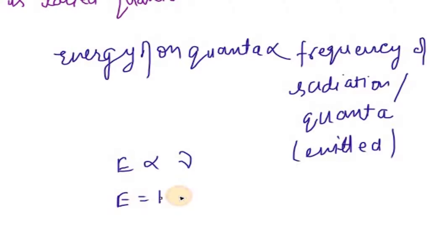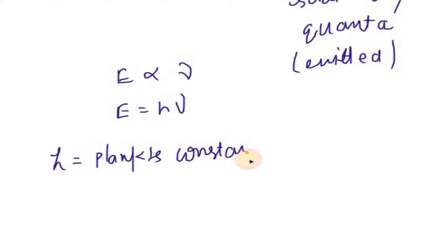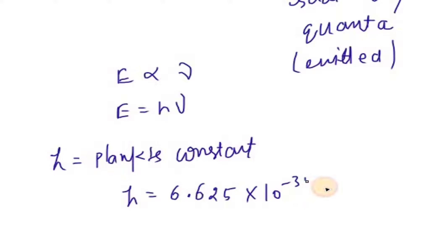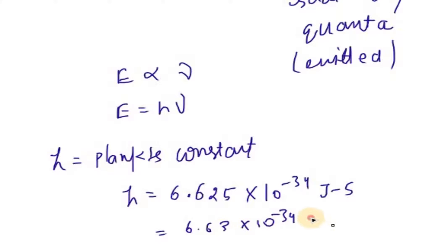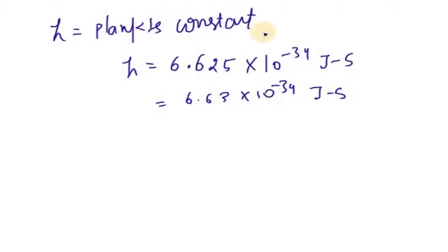When we remove the proportionality sign, we introduce a constant H, known as Planck's constant. The value of Planck's constant is H equals 6.625 × 10⁻³⁴ joule·second, also written as 6.63 × 10⁻³⁴ joule·second.